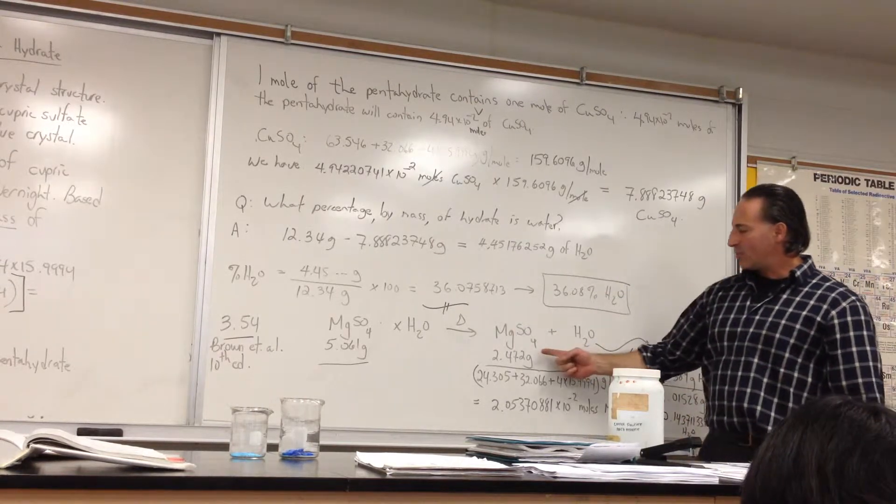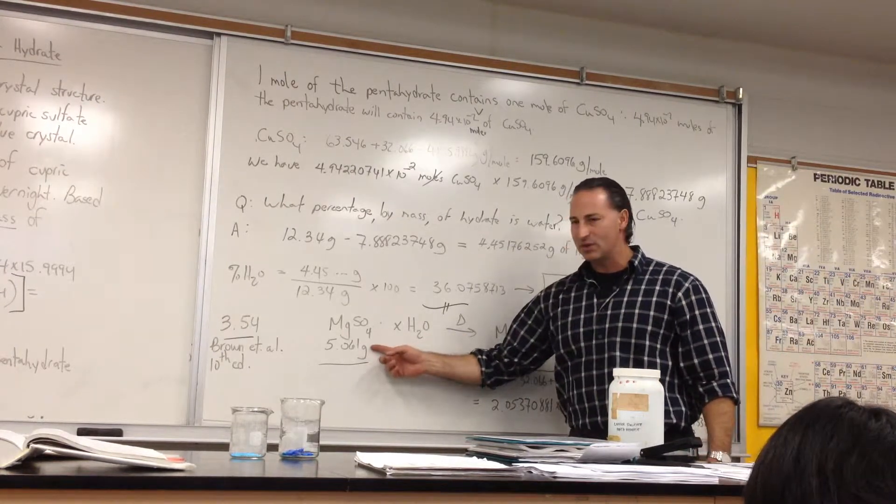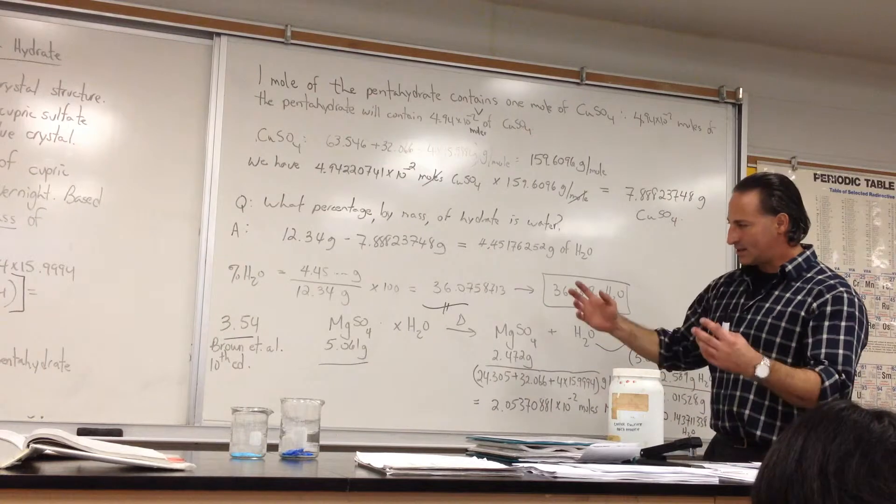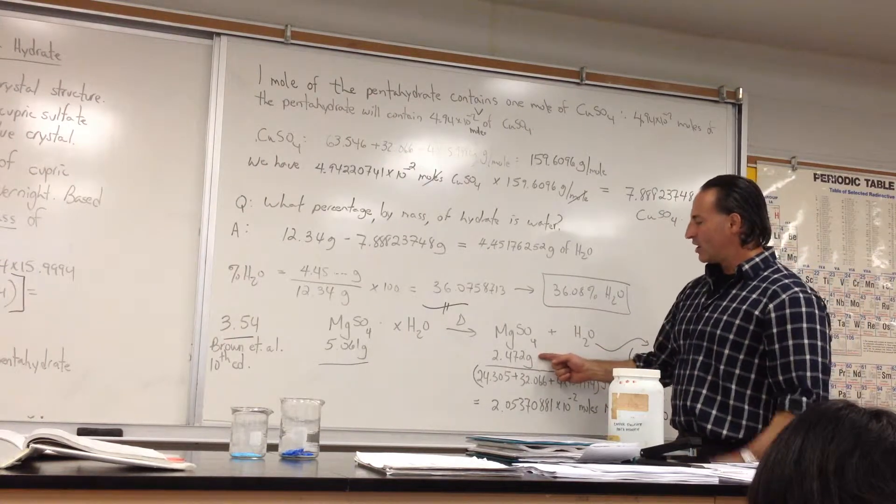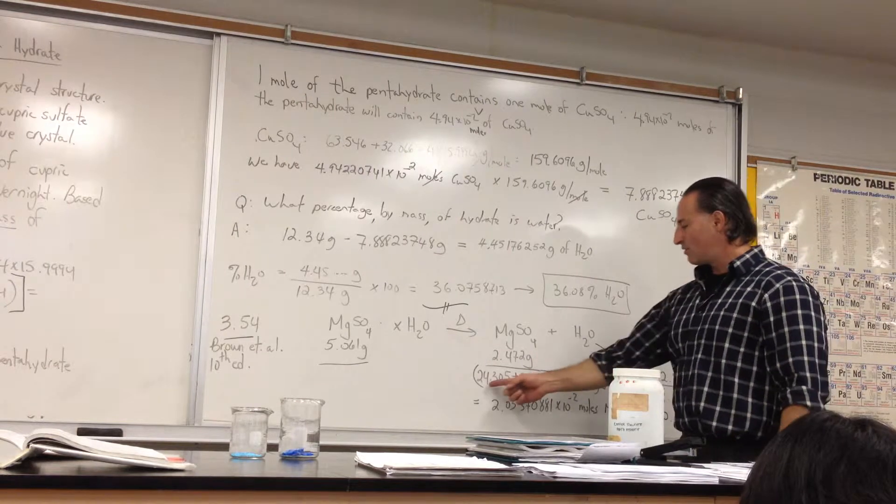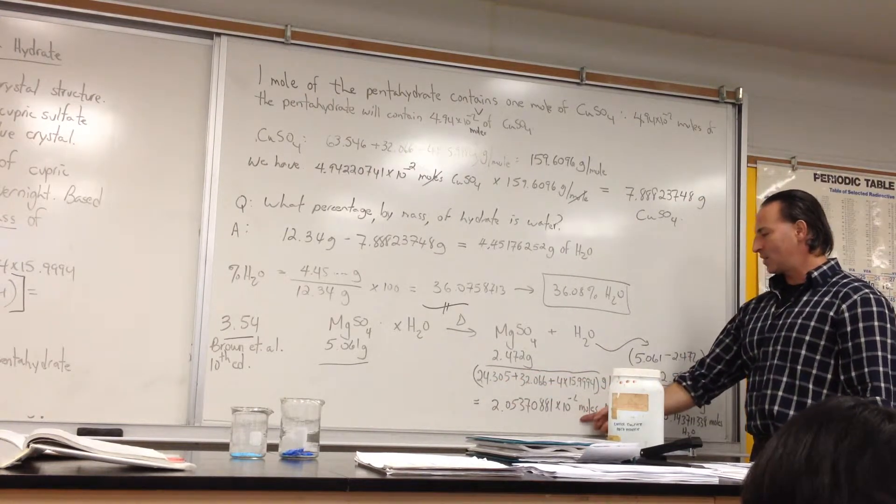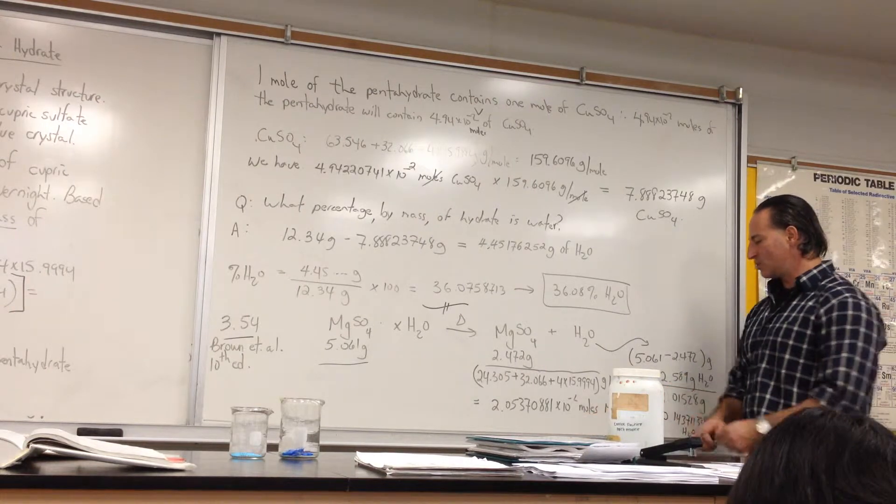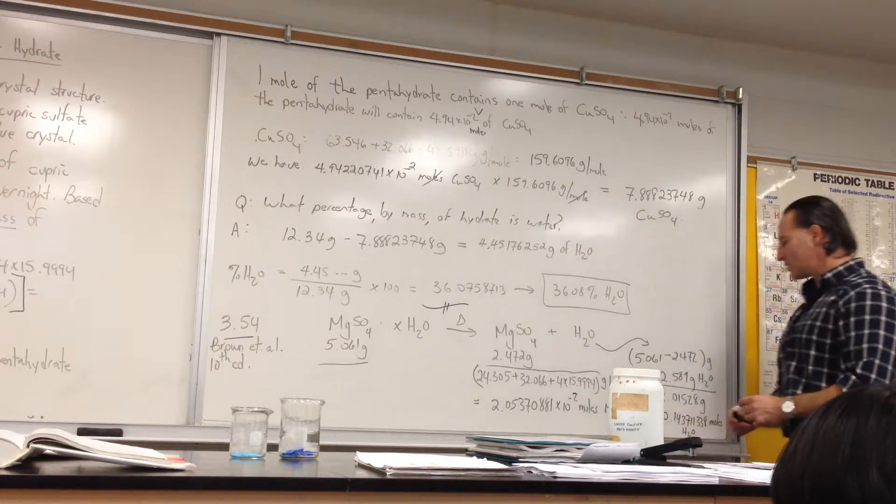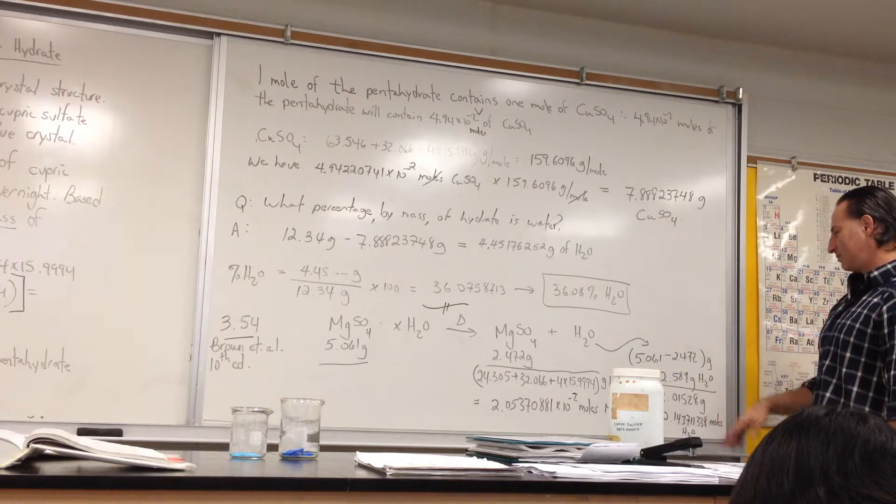So we'll start off by looking at the data. We started off with 5.061 grams of magnesium sulfate X hydrate, and we're left with 2.472 grams of pure magnesium sulfate. So we're going to find the molar mass of pure magnesium sulfate without water, and it tells us that we have 2.05 times 10 to the minus 2 moles of the magnesium sulfate.